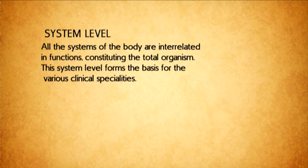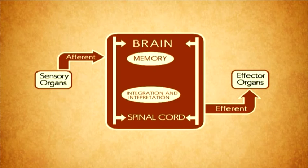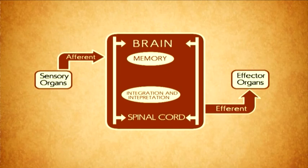This system level forms the basis for the various clinical specialties. There is a diagram simplifying the organization of the nervous system. The functions of the nervous system entail picking up information from the environment through the sensory receptors, entering the central nervous system — made up of the brain and the spinal cord — where the information is integrated. It is then taken back to the effector organ through an afferent pathway for response. The central nervous system, apart from integrating and interpreting, also stores information in the form of memory.